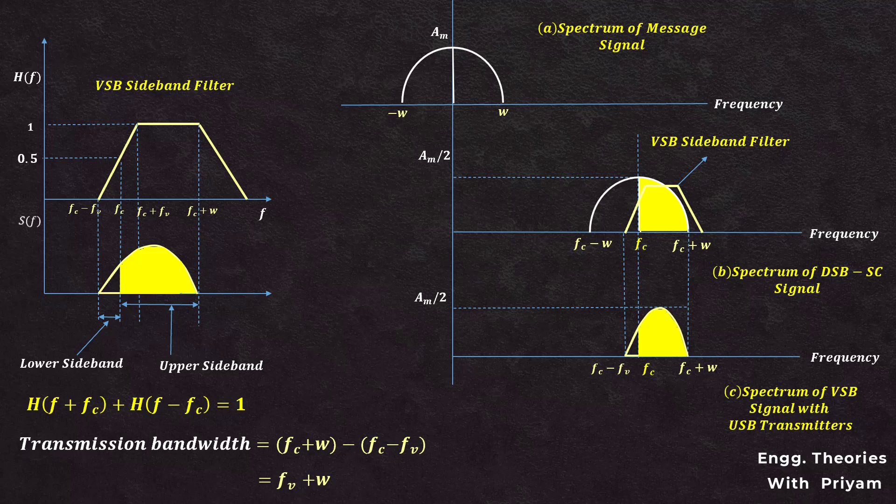Here the first term H(F−fc) represents the negative frequency part of the filter centered at fc, shifted to the right by fc, corresponding to the upper sideband (USB). The second term H(F+fc) represents the positive frequency part of the filter centered at −fc, shifted to the left by fc, corresponding to the lower sideband. By combining these two frequency components, the filter allows the vestige of the lower sideband to be transmitted along with the upper sideband, making VSB modulation suitable for analog broadcasting such as television transmission.